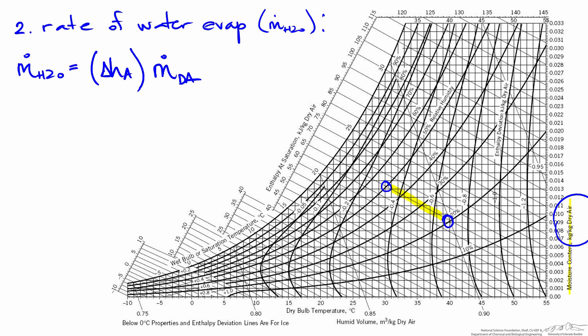Now we don't know what the flow rate of dry air is. We were given a volumetric flow rate. There's another quantity on the chart that's going to help us, and that's the humid volume. This is in units of cubic meters of humid air per kilogram of dry air. So by looking at the units, if we want the mass flow rate of dry air, we need to divide the volumetric flow rate by the humid volume. So we need to find the absolute humidity at the inlet and the outlet as well as the humid volume.